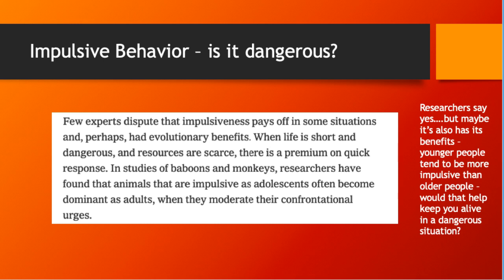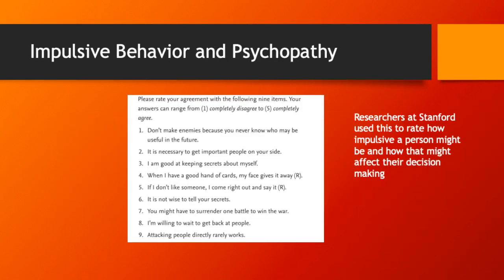Research shows that impulsiveness pays off in many situations and may have an evolutionary benefit — that if life is short and dangerous, you kind of have to be impulsive if you're going to survive. Researchers at Stanford used a nine-question scale to rate how impulsive a person might be and how that might affect their decision-making. This is available on the larger PowerPoint, so I'll let you go through those nine qualities at your own pace.